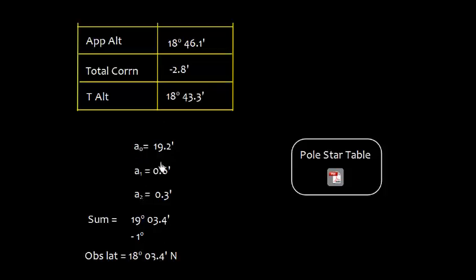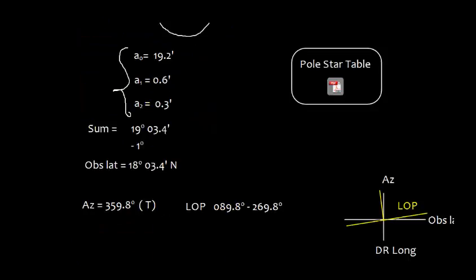Now what we have to do: we just need to add, and the addition technique you can use the calculator or you can just sum it up. These values should be added to the true altitude plus these values, so we get 19° 03.4'. All you have to do is subtract 1°, so we get this observed altitude as 18° 03.4' north. That is the answer.